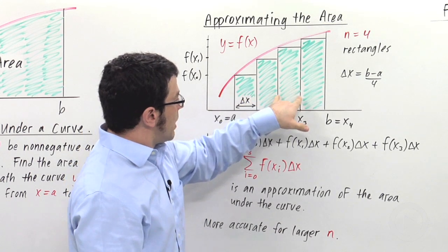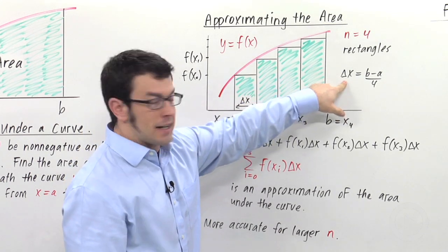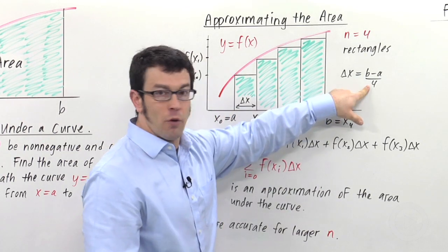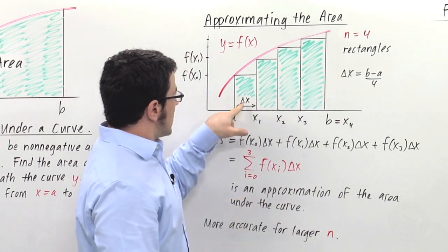Now, each rectangle is the same width, and that width, delta x, is b minus a, the total width of the interval, divided by 4, the number of rectangles. So that's what delta x is.